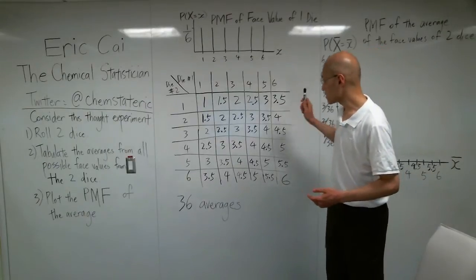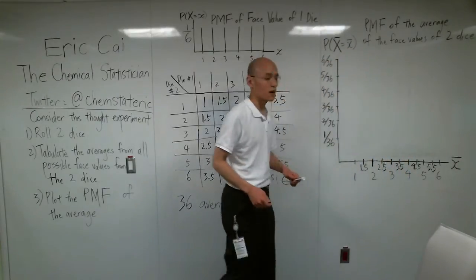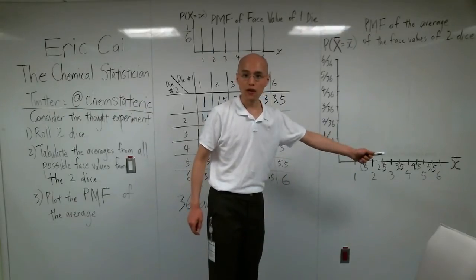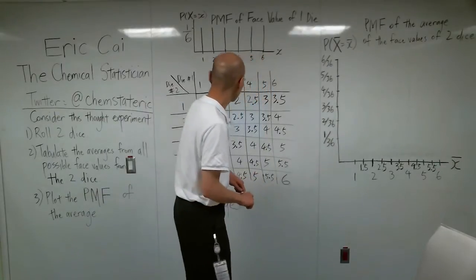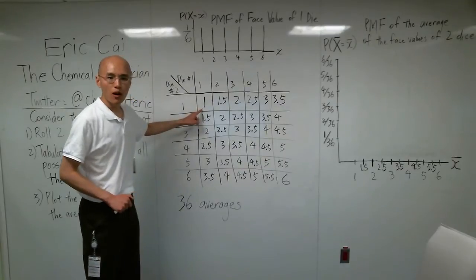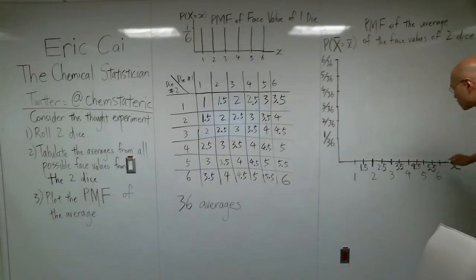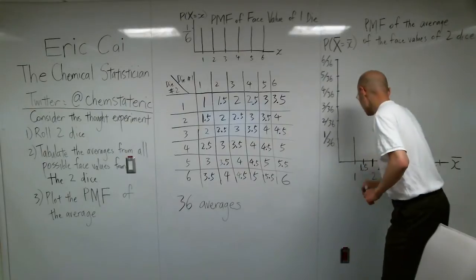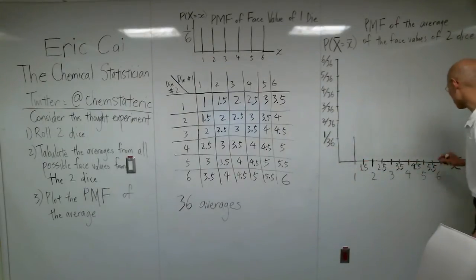Now, in this six-by-six table, there are 36 averages. So, knowing this number helps us to figure out what the PMF should be. There are 11 values in the support set of this random variable, the sample mean, or the average. And let's take a look at the number 1. It shows up once in this table, and there are 36 averages. So, the probability of the average taking on the number 1 is 1 over 36. And it's the same thing for the number 6. It only shows up once in that table, so it's also 1 over 36.